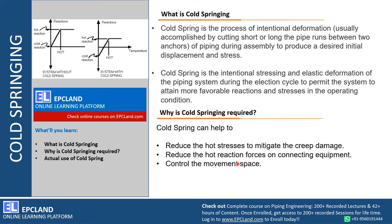It also reduces hot reactions. When connecting with equipment, there may be chances of hot reactions — these intentionally induced cold deformations will mitigate those hot reactions. When we know the system is going to move because of hot stresses inside the piping system, we provide this intentional deformation in advance so that the movement is controlled. This is what cold springing is and why we require it.